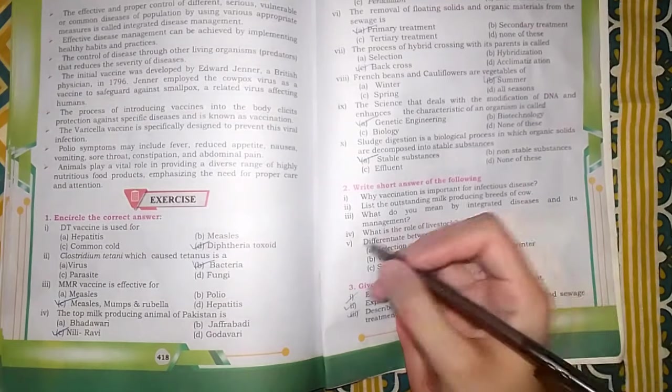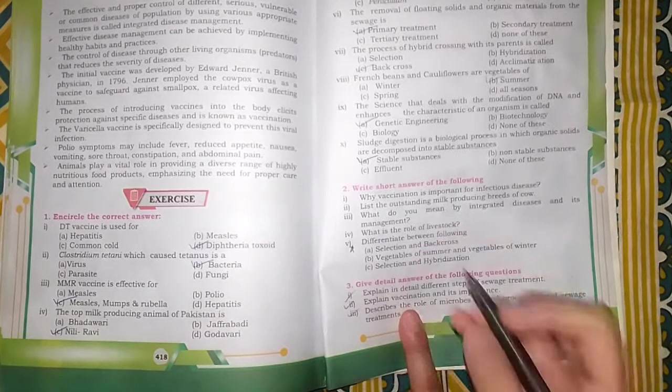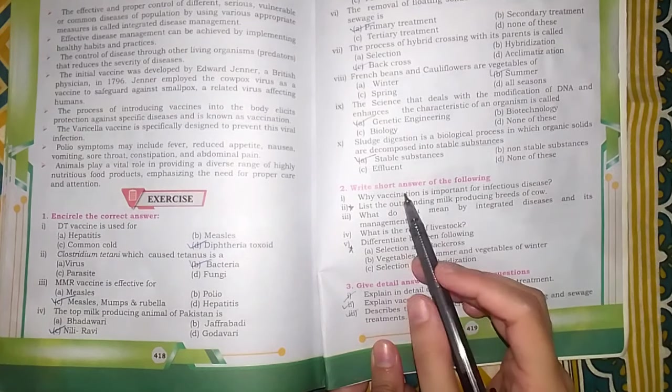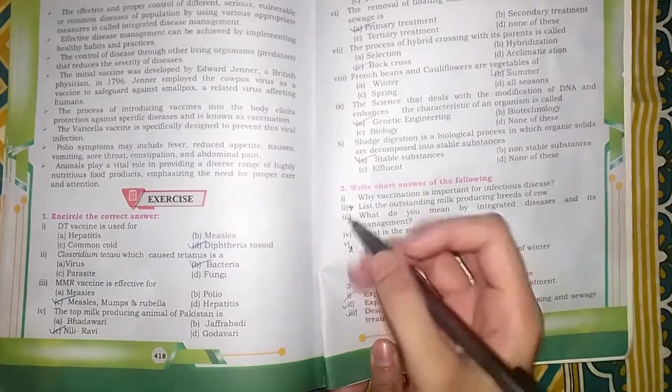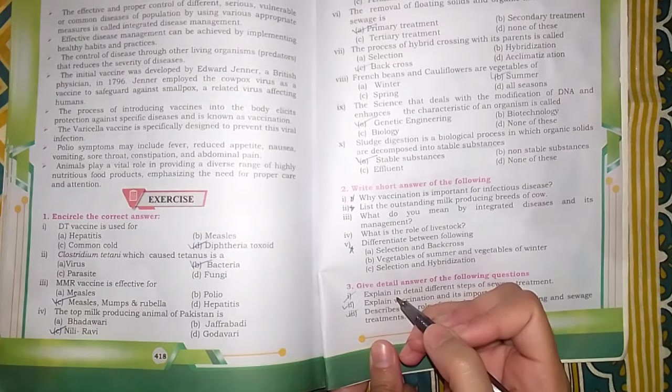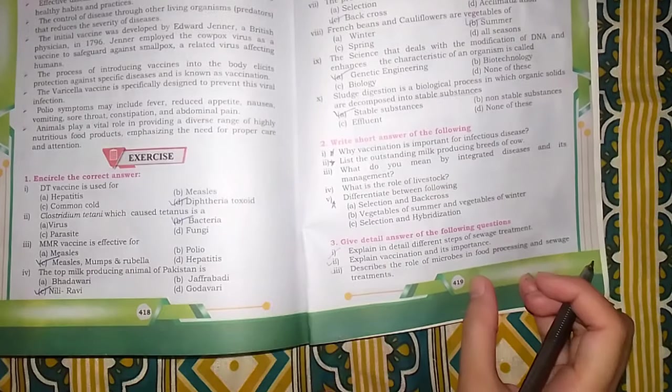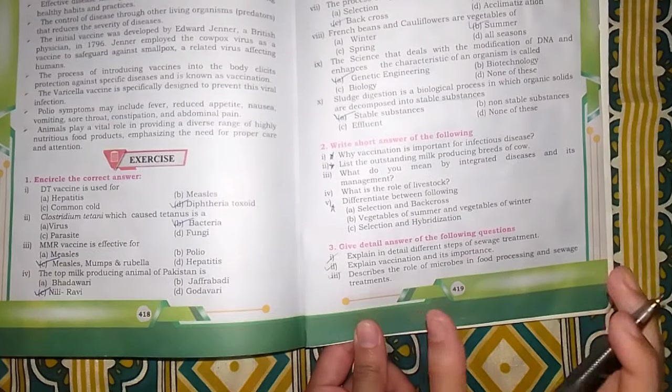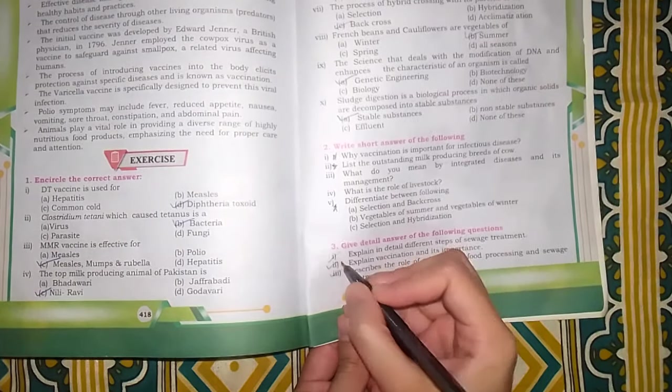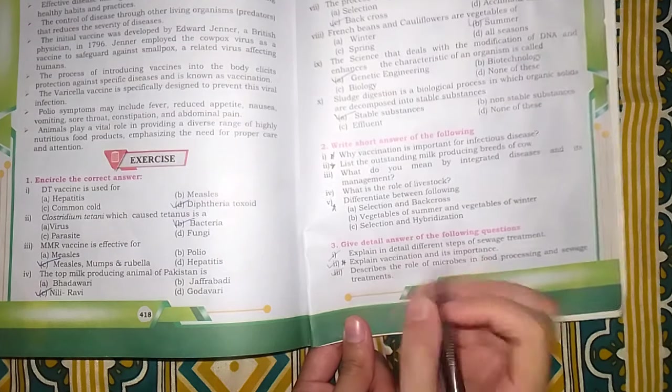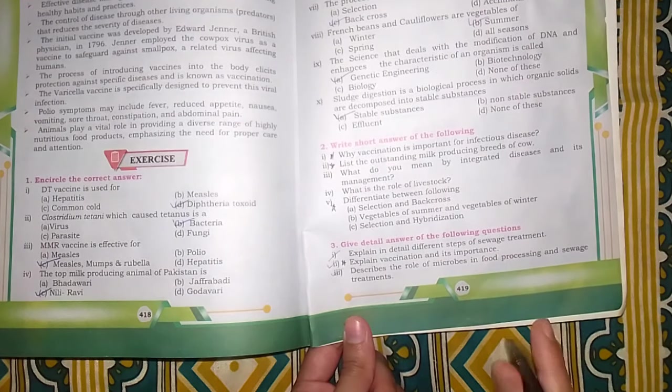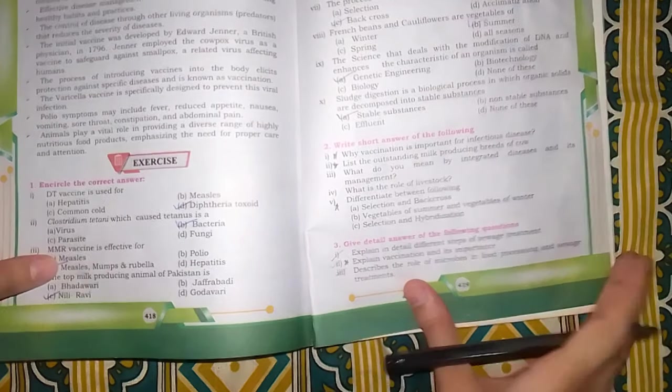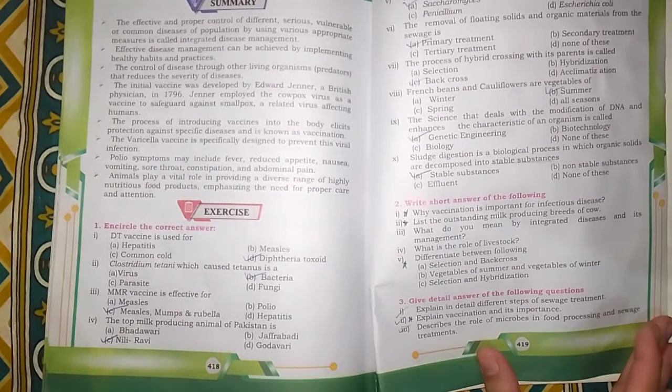Chapter 27, Biology and Human Welfare. There are 3 questions: selection and hybridization, vegetables of summer and winter, selection and inbreeding. This difference you need to do. Question number 2, list of outstanding milk producing breeds of cow and why vaccination is important for infectious disease. This also needs to be done. This is detailed questions.